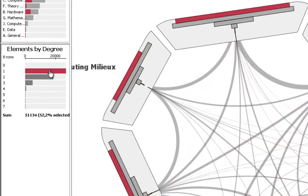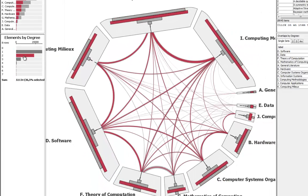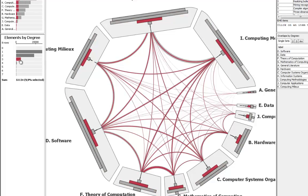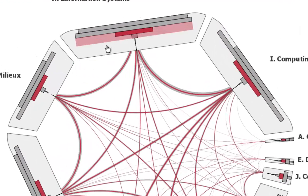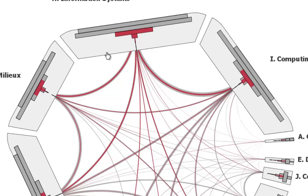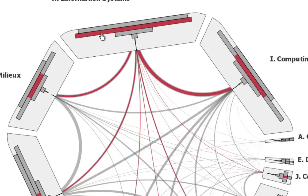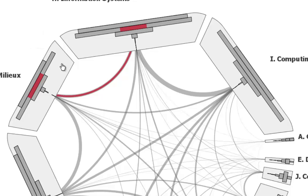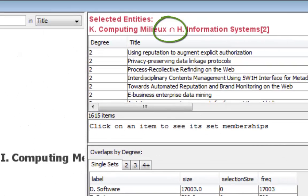Elements having a specific set membership degree can be selected from the degree bar chart. Radial sets allow selecting the elements in a specific set by their degrees. Using keyboard modifiers, multiple subsets can be combined to refine the selection.